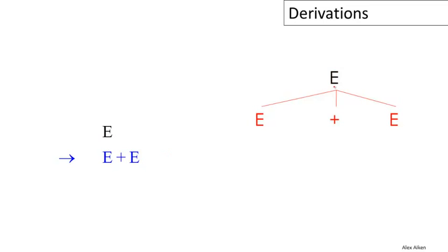The first step is that we have a production E goes to E plus E. What that means is over in the tree, we take the root of the tree and we give it three children: E, plus, and E.